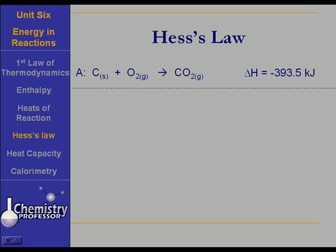Now, let's look at it a different way. Take process B, in which we take carbon solid, and we allow it to burn with an insufficiency of oxygen, and we get carbon monoxide gas. And when we do, that delta H is minus 110.5 kilojoules.